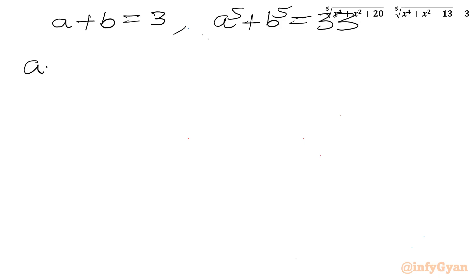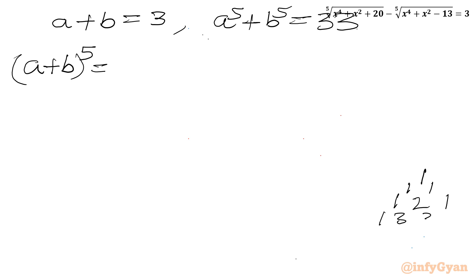Now I will use binomial expansion. I need to expand (a + b)⁵. We should be aware of the expansion coefficients, so I will use Pascal's triangle. For power 3 it is 1,3,3,1; for power 4 it is 1,4,6,4,1; and for power 5 the expansion coefficients would be 1, 5, 10, 10, 5, 1.